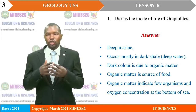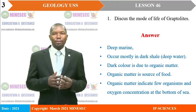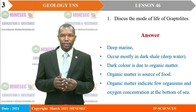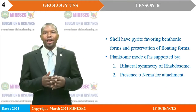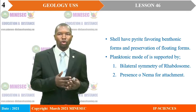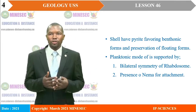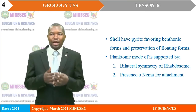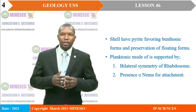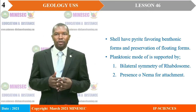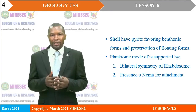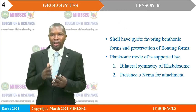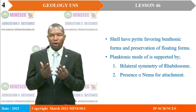The dark color is attributed to the organic matter that builds them. The organic matter is the source of their food. The organic matter equally indicates foul organisms and low oxygen concentration at the bottom of the sea. Their shells have pyrite, favoring their benthonic mode of life. Therefore, they are most likely preserved as floating forms. Their planktonic mode of life is supported by: one, the bilateral symmetry of the rhabdosome; secondly, the presence of nema for attachment. These two features — the nema and the rhabdosome — help in the balancing of the organism as it floats.